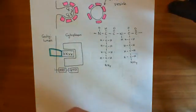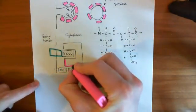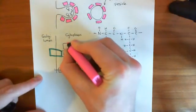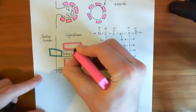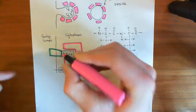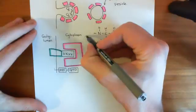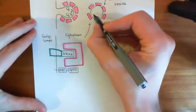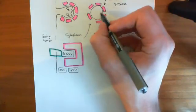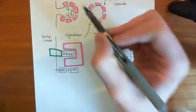Here is our COP1 protein complex again. What is going to happen is you're going to bud off a vesicle containing these membrane-bound proteins, and it will be coated in COP1. Overall, you're going to get another one of these COP1-coated vesicles, but this time the membrane protein will be in the membrane of the vesicle, whereas in the case of the luminal protein it will be in the lumen of the vesicle.